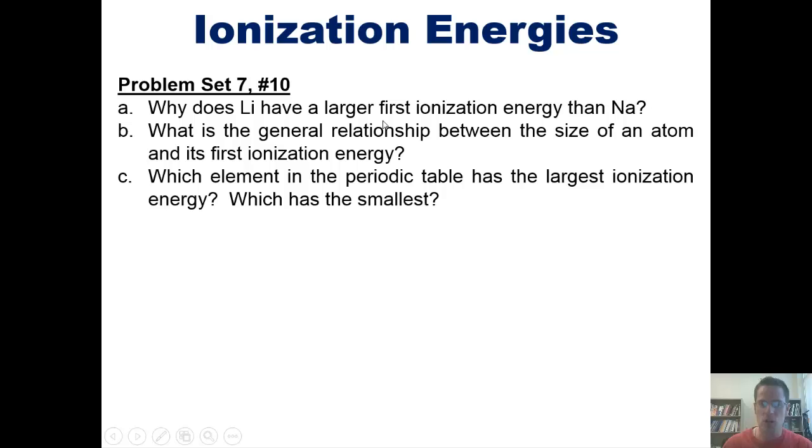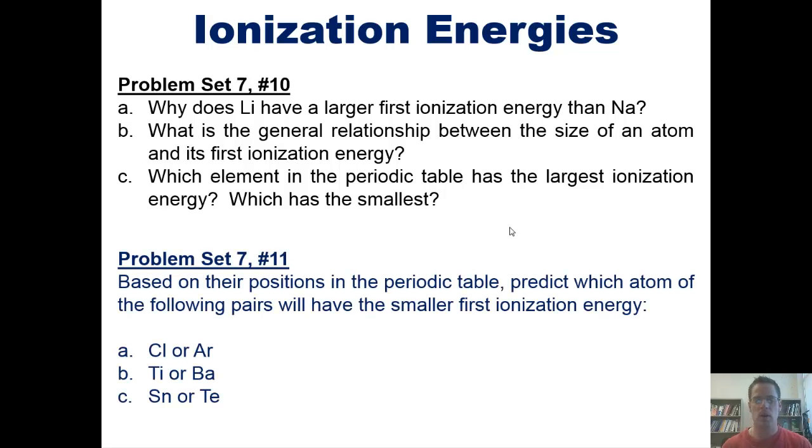First, why does lithium have a larger first ionization energy than sodium? Second, what is the general relationship between the size of an atom and its first ionization energy? And third, which element in the periodic table has the largest ionization energy and which one has the smallest? Next, based on their positions in the periodic table, predict which atom of the following pairs will have the smallest first ionization energy: Cl or Ar, Ti or Ba, Sn or Te. Now, I'd like you to attempt to do all of these questions on your own. If you'd like to, I'm going to put a link here to a separate video in which I answer them on the board.